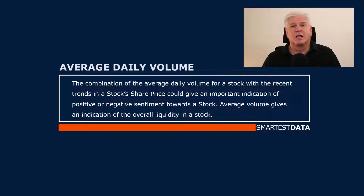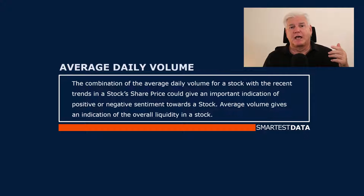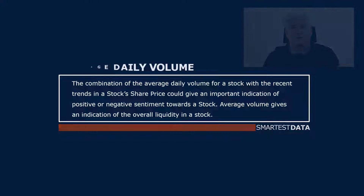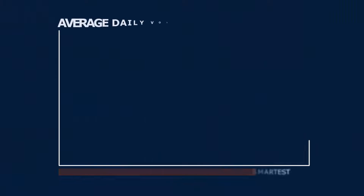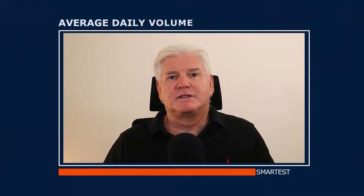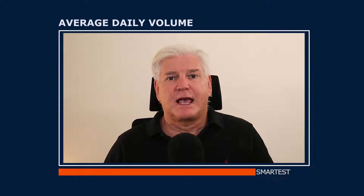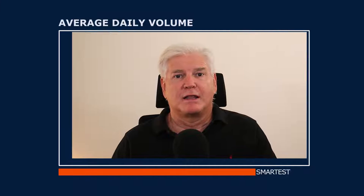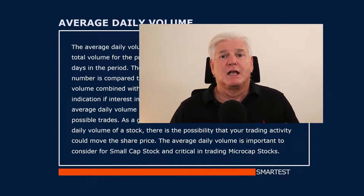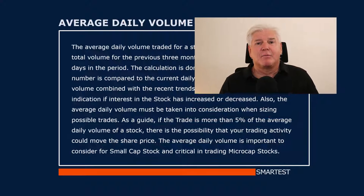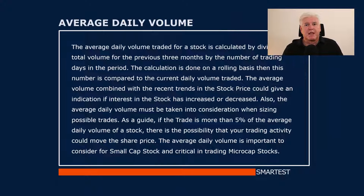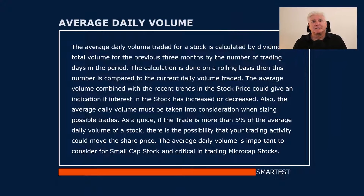Average volume gives an indication of the overall liquidity for a stock. The average daily volume traded for a stock is calculated by dividing the total volume for the previous three months by the number of trading days in the period.